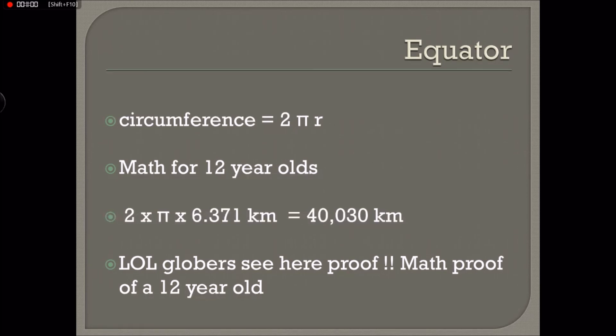So, circumference is 2 times pi times r. Math for 12 year olds. 6,371 kilometers gives us 40,000 kilometers. So for Globers, we think we have a proof here, a math proof of a 12 year old, which we as flat earthers all understand.